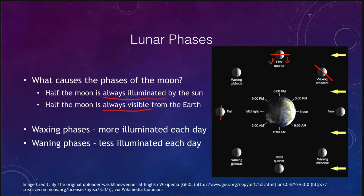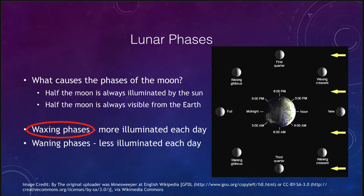When the moon goes through its cycle of phases it is as it orbits around the Earth. As the moon goes around the Earth, nothing changes — still half of it is illuminated and half of it is pointing towards the Earth. But the percentage of the illuminated part that we see from the Earth changes. Starting at new moon and working our way through, let's look at the waxing phases. These are what occur when the moon is getting more and more illuminated each day. As the moon orbits around the Earth it will get progressively more and more illuminated.